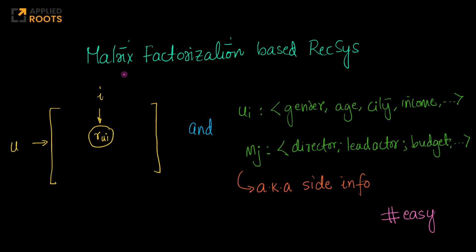Hi friends. This is a very interesting question when we are building recommendation systems using matrix factorization techniques. When you are building a recommendation system using matrix factorization, we have a ratings matrix like this, wherein each row corresponds to a user U, and each column corresponds to an item I.